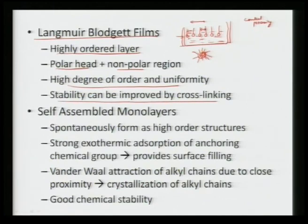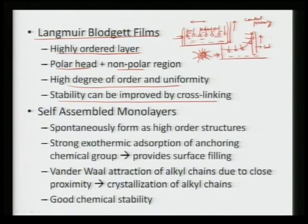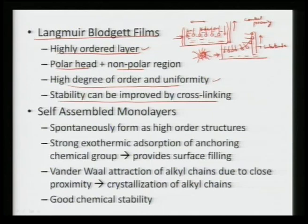Stability of Langmuir-Blodgett films can be improved by cross-linking. If we want to coat a substrate using these films, we compress the surface and lift the substrate, so the heads start getting deposited on its surface. In the process we get a coating on the particular substrate. Langmuir-Blodgett films are highly ordered layers with polar heads and non-polar regions; they render a very high degree of order and uniformity, and stability can be improved by cross-linking all the chains.